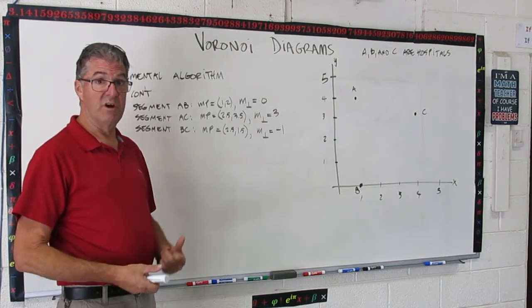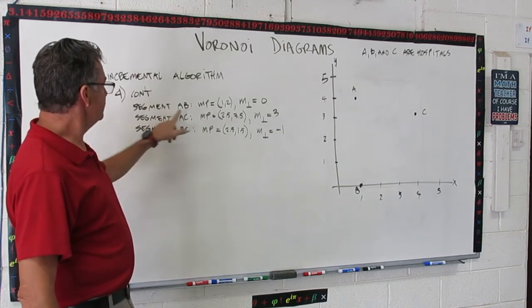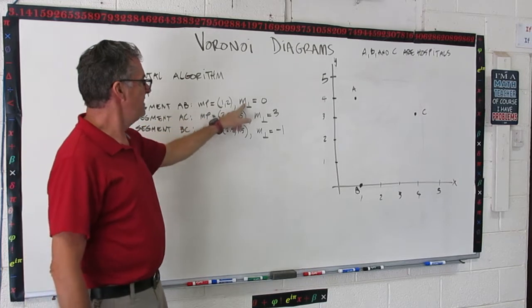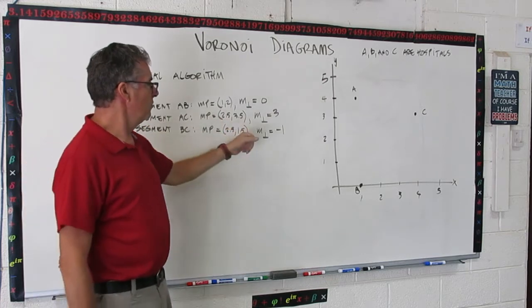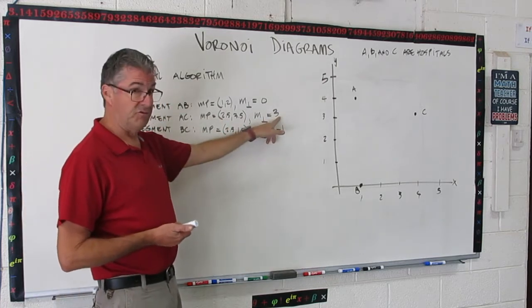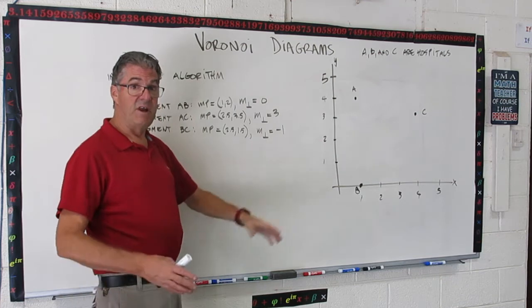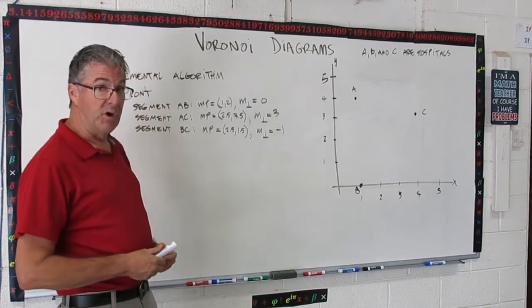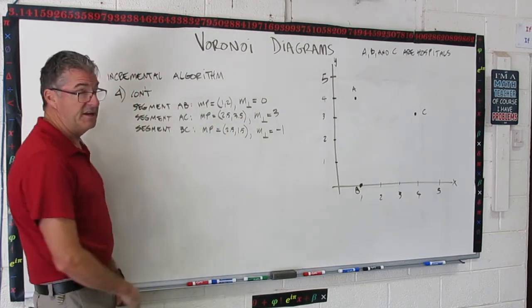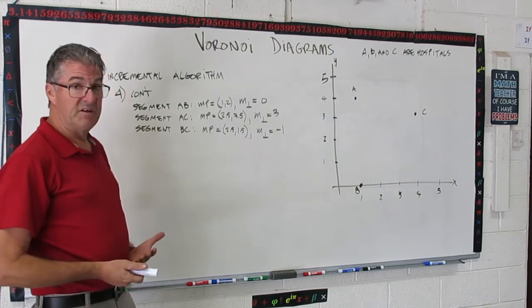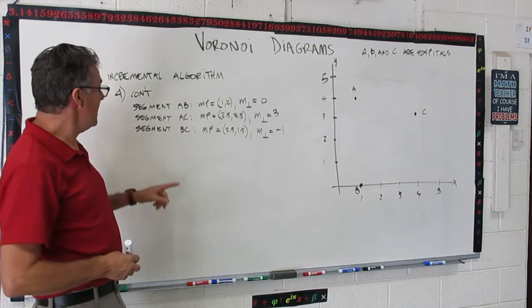Let's continue with step four in our incremental algorithm. So I summarized what we learned in steps one through three. Namely, segment AB has a midpoint of one, two, and the segment, and its perpendicular slope would be zero. Segment AC has a midpoint of two point five, three point five, with the slope of a line perpendicular to that being three, and so on for BC, two point five, one point five, and that perpendicular slope is negative one. So now what we want to do is we want to draw the perpendicular bisectors of these three segments. So that's why we found these three series of information to do the perpendicular bisector. It has to go through the midpoint of the segment, and the slope has to be perpendicular to the segment.